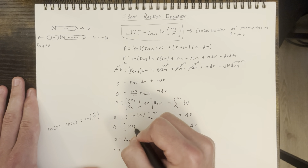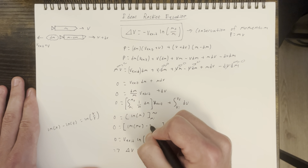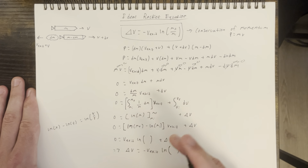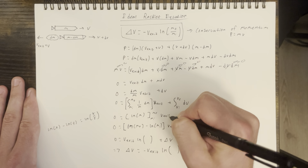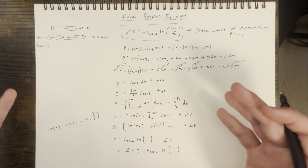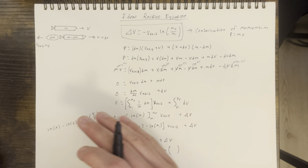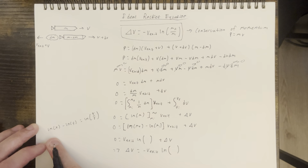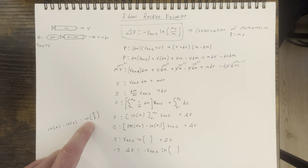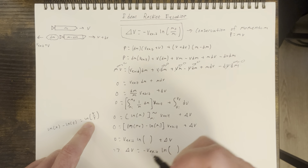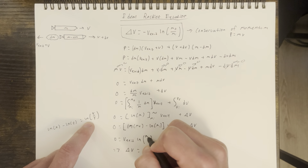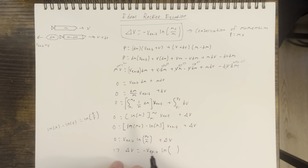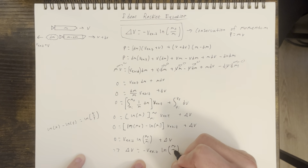On the left side, the integration of 1 over m gives us the natural log, so we can write natural log of m evaluated from our initial mass to our final mass. This is all multiplied by our exit velocity, which we're assuming is constant — that's why we can exclude it from the integration. Using the law of logarithms, one natural log minus another can be combined, giving us the form most commonly seen in textbooks. This is essentially our ideal rocket equation in its standard form.